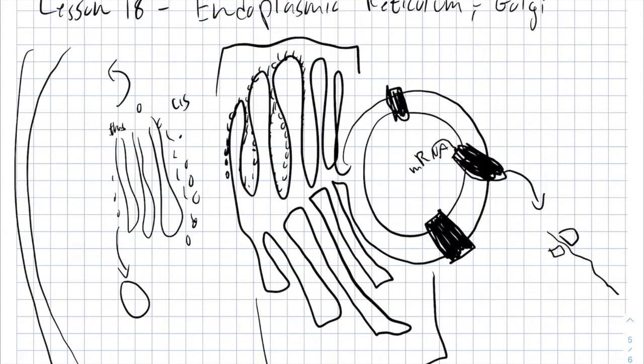The smooth endoplasmic reticulum is the place where lipids are metabolized and created. The cell membrane itself is being created. It also creates steroids. It can metabolize carbs. It can detox carbs or other metabolites.